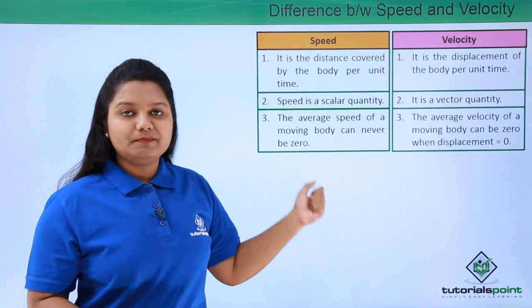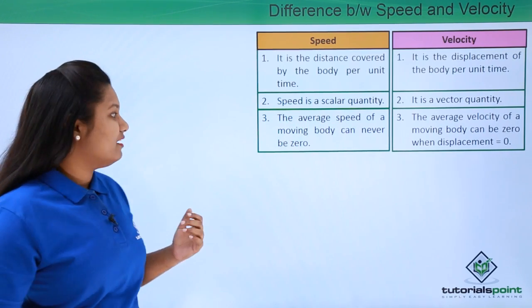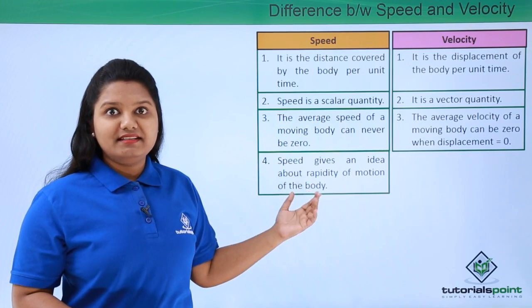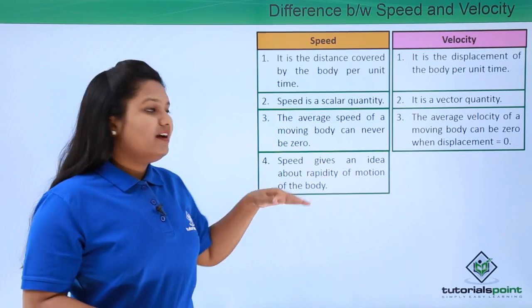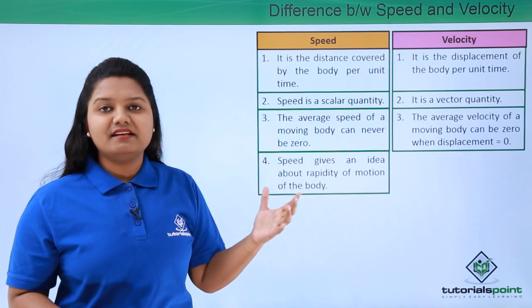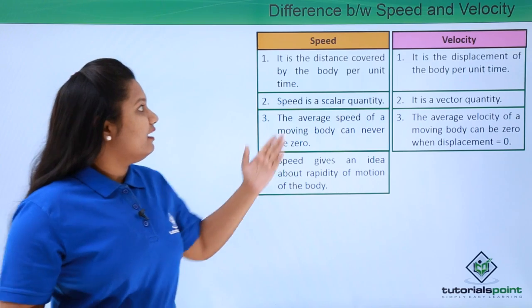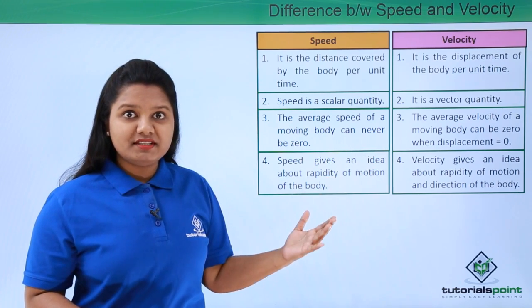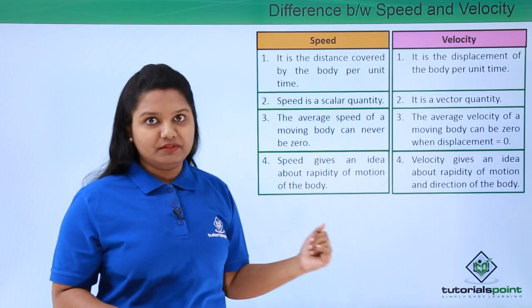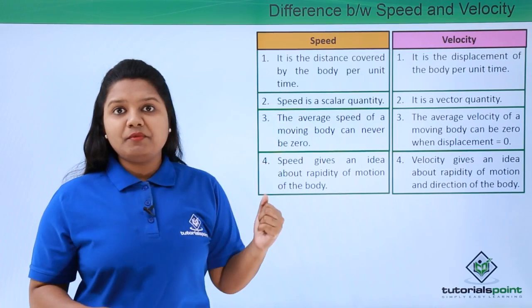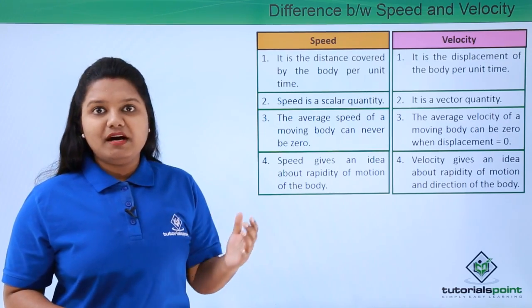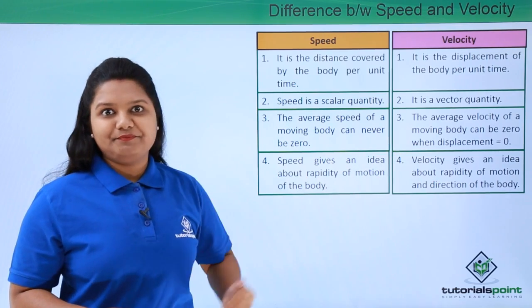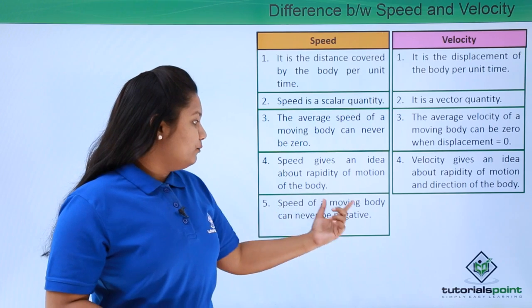So the average velocity of a moving body can be zero when the displacement of the body is zero. Speed gives us an idea about the rapidity of motion of the body — how much a body has traveled in a certain period of time. In the case of velocity, since we are concerned with displacement, it is a measure of the rapidity of motion along with the direction of the body.